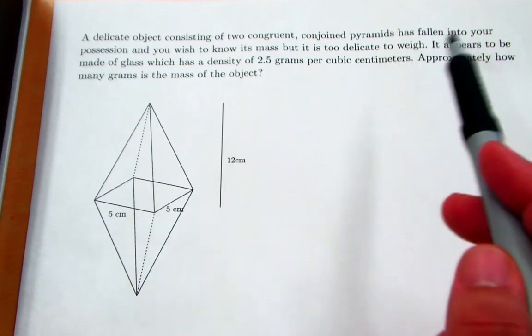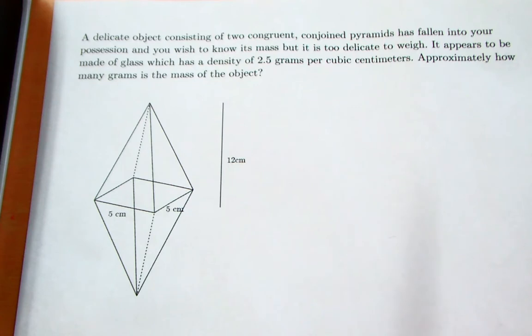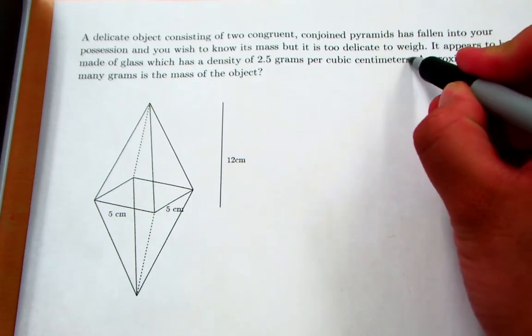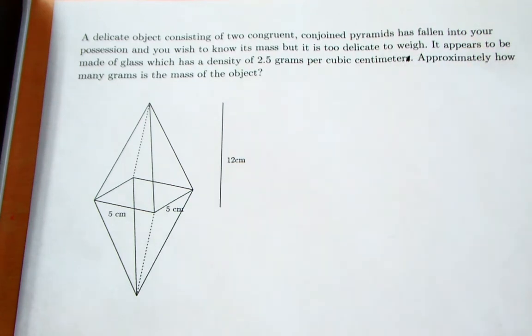It appears to be made of glass which has a density of 2.5 grams per cubic centimeter. Approximately how many grams is the mass of the object?